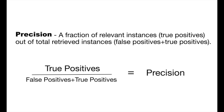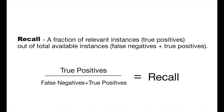Precision is defined as a fraction of relevant instances, or true positives, out of the total retrieved instances — that's false positives plus true positives. For recall, it's defined as a fraction of relevant instances, or true positives, out of the total available instances — so that would be your false negatives plus your true positives. And that equation looks like this.